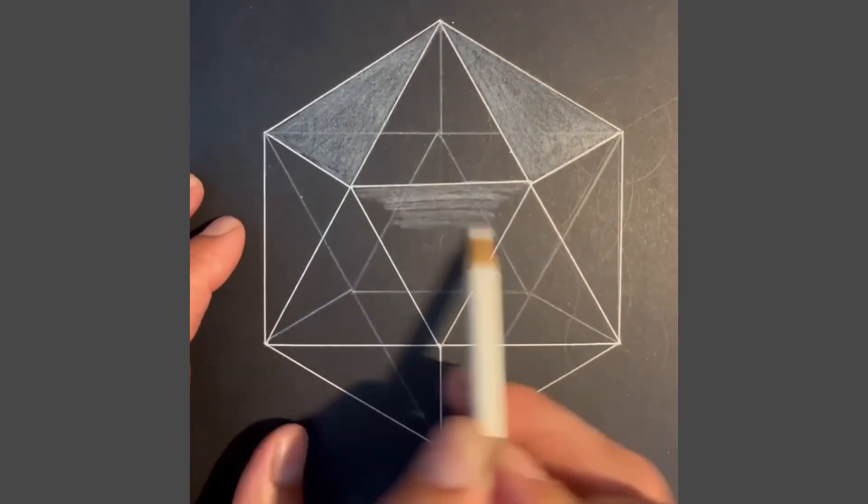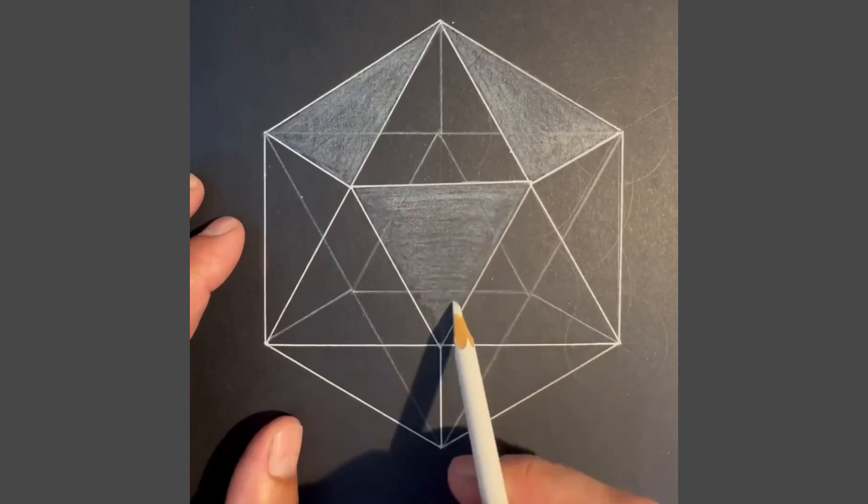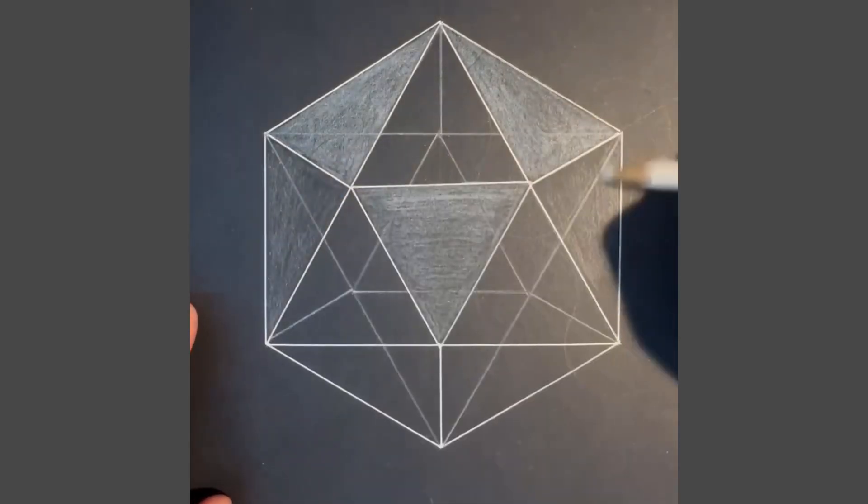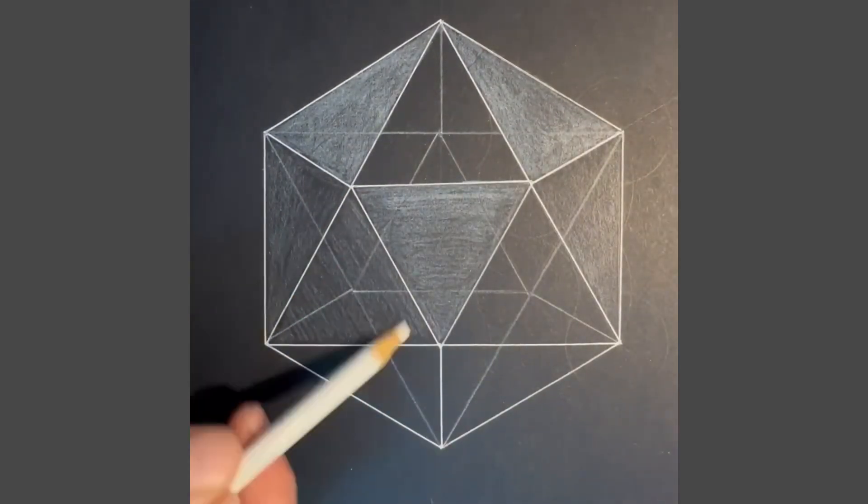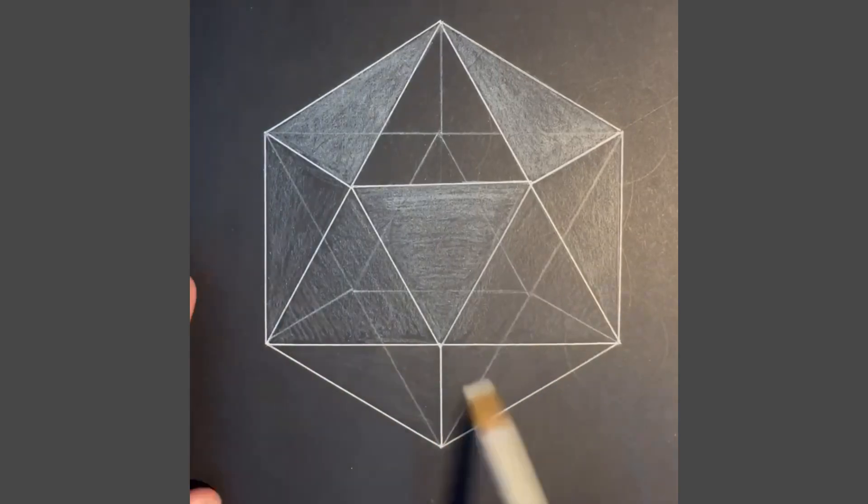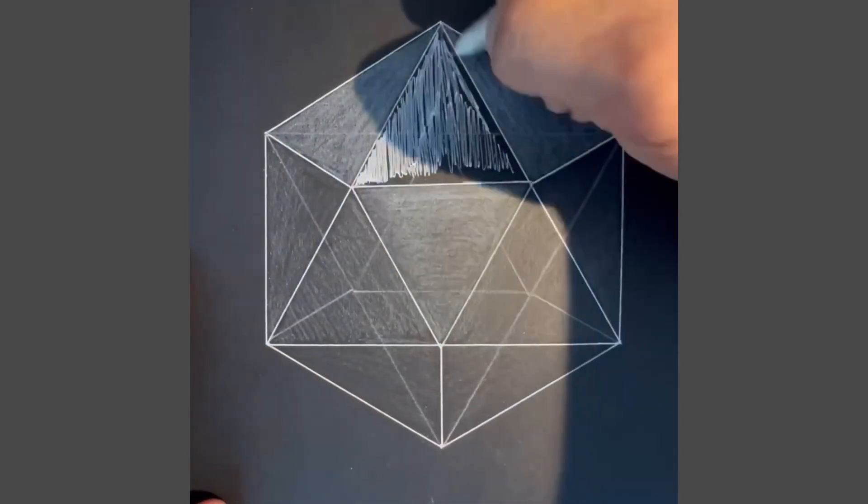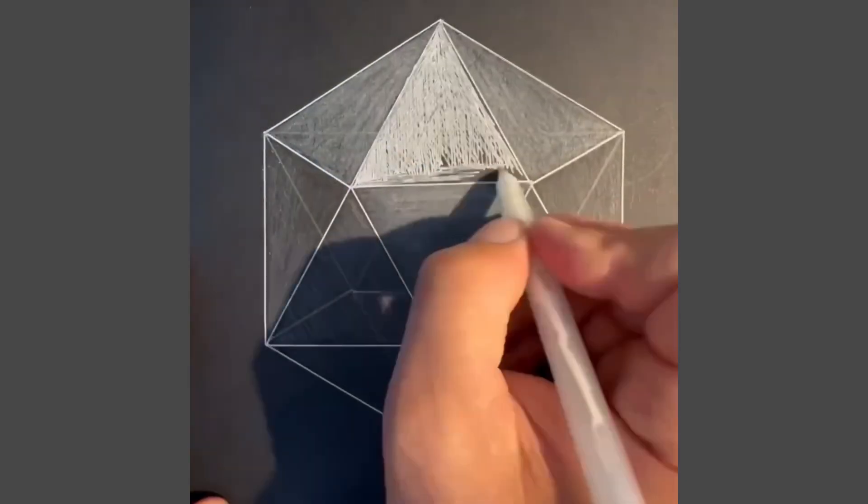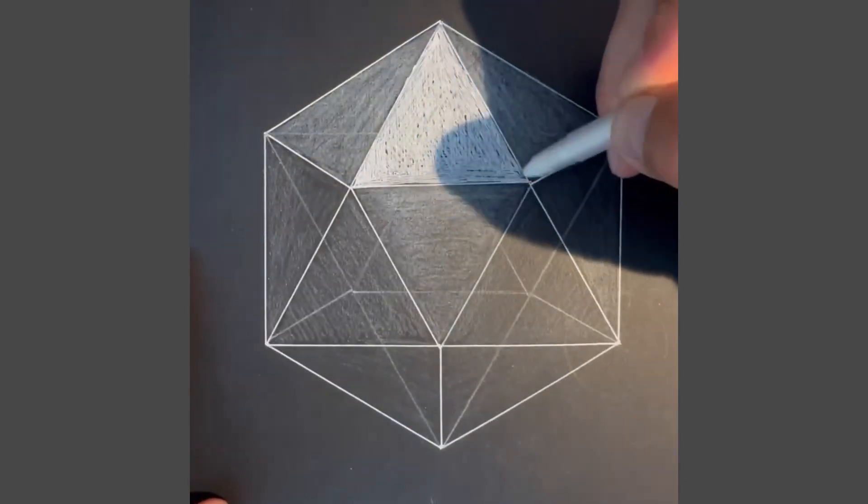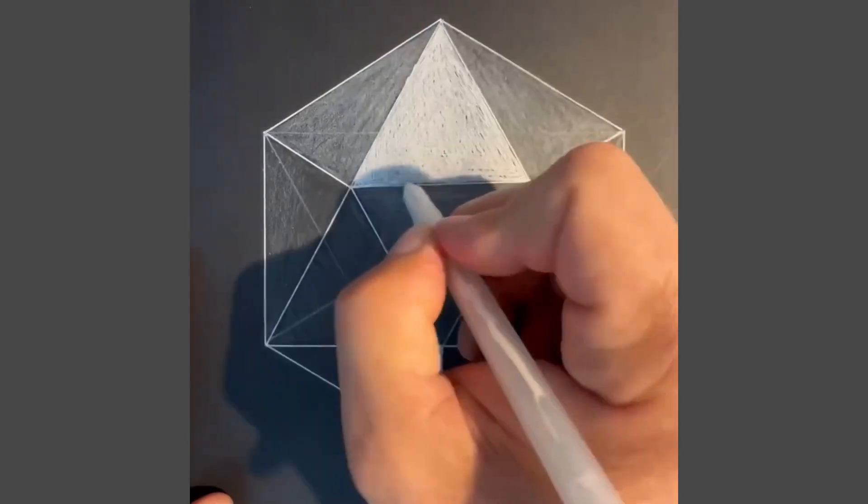Then using your pencil, find out a light source and add highlights. This will give it a three-dimensional feel. Think about where the light source is coming from and then add less and less pencil to add the shadows. Then using the white gel pen, fill in the last section so that it is absolutely three-dimensional. There you go. Enjoy.